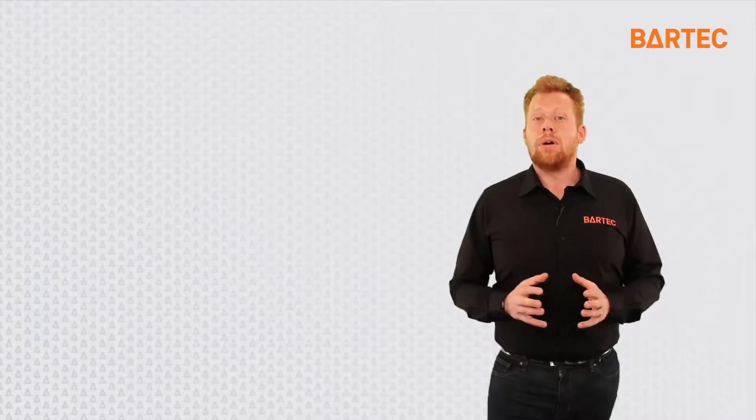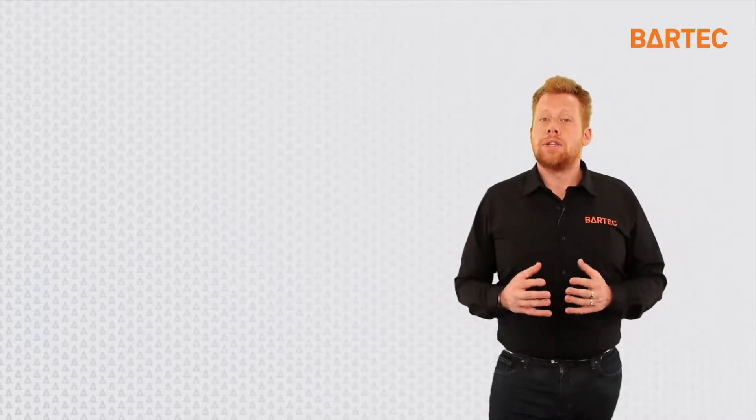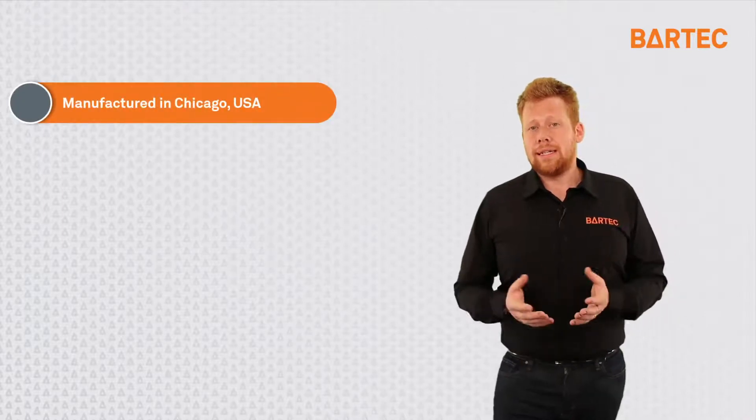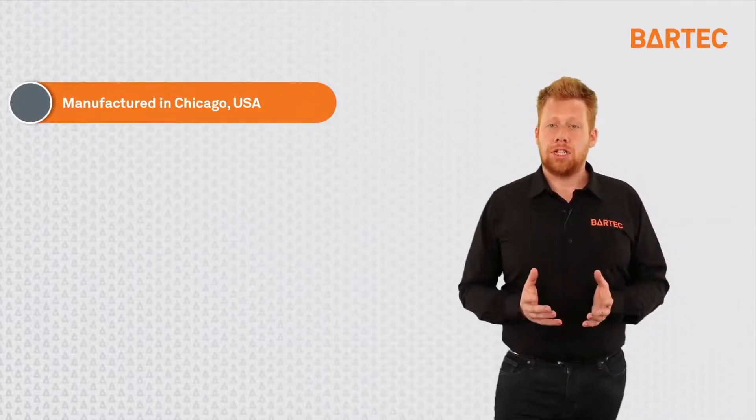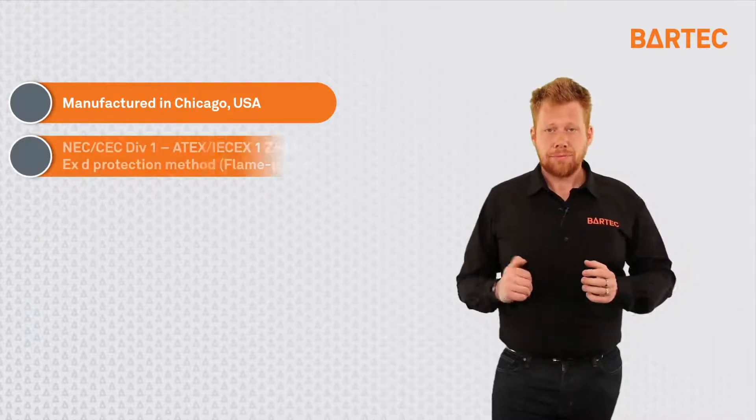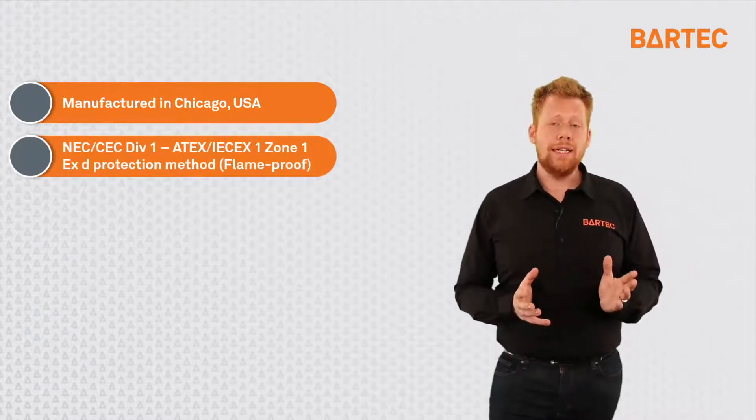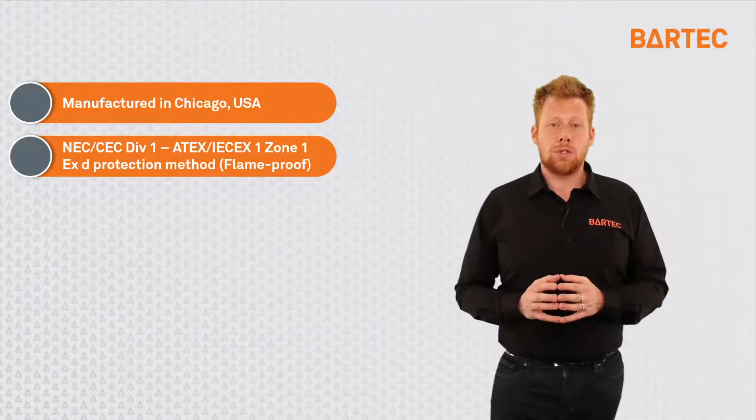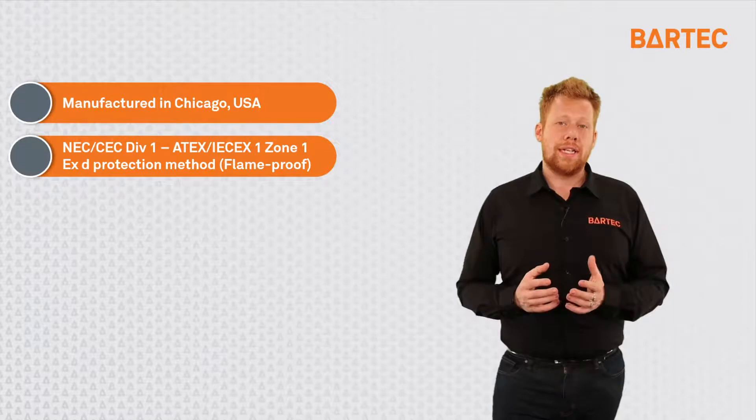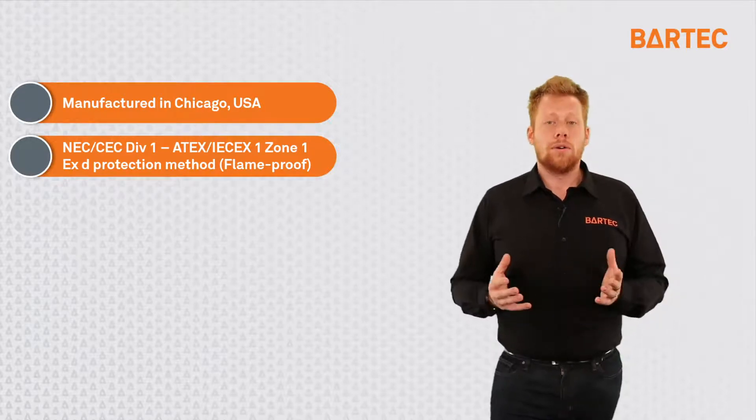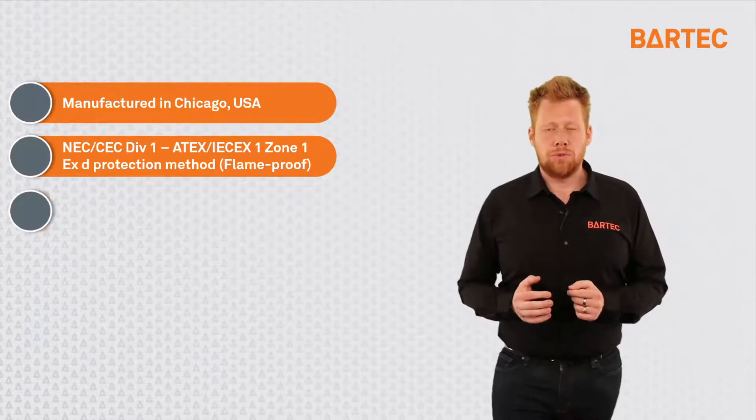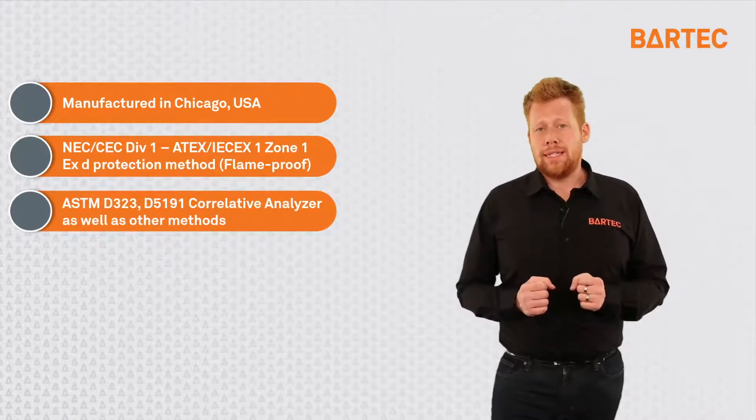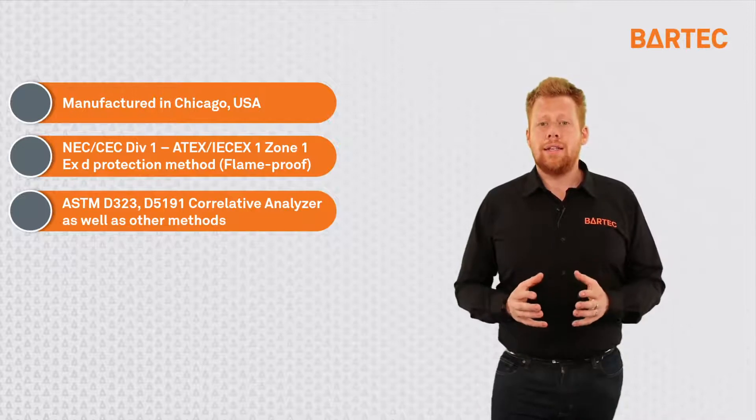Now that you know how the P700 measures RVP, there are a few more features I want to point out. The first one is that this analyzer is manufactured at our Bartec Orb factory in Chicago in the US. The system is rated for NEC CEC Division 1 and ATEX IEC EX Zone 1. To do so, we use an EXD protection method, flame proof, also commonly called explosion proof.